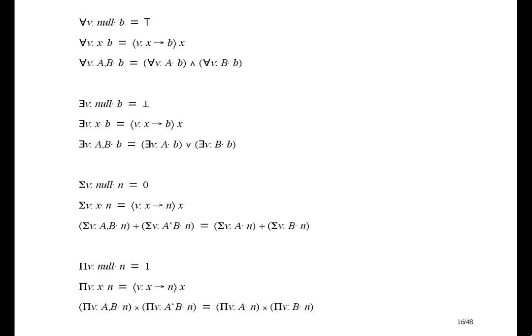Here are the axioms defining these quantifiers. I've put them all on one slide so you can see the pattern. The first axiom for each quantifier shows its effect on the null domain. The middle axiom has a one-element domain, and the last axiom has a union domain. For the null domain, the result is always the identity element for the operator the quantifier is based on: true is the identity for conjunction, false for disjunction, zero for addition, and one for multiplication. Most people don't have any trouble with this.